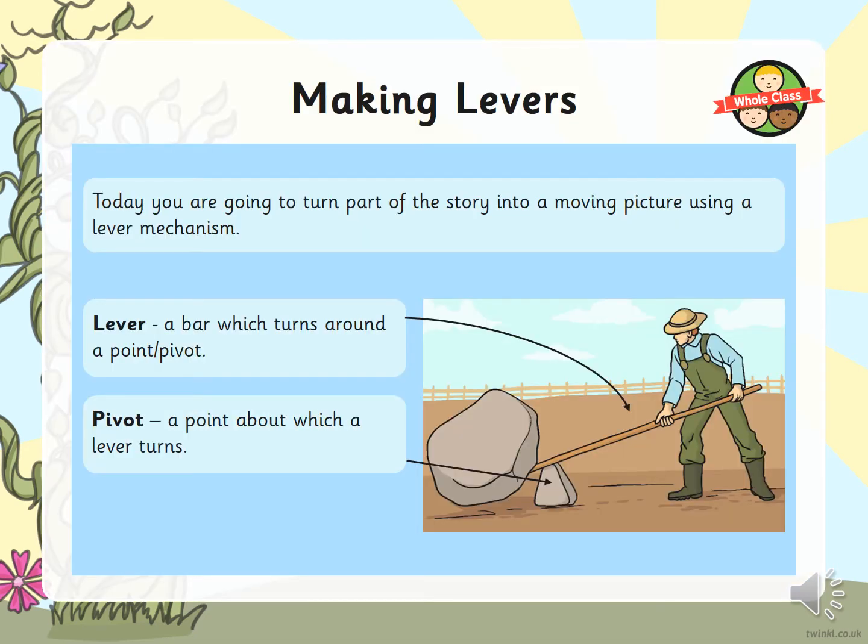We are going to turn parts of the story into a moving picture using a lever mechanism. A lever is a bar which turns around a point or a pivot, and the pivot is the point around which the lever turns. Here in our picture, the pivot is the rock on the floor and the lever is the stick the man is using.